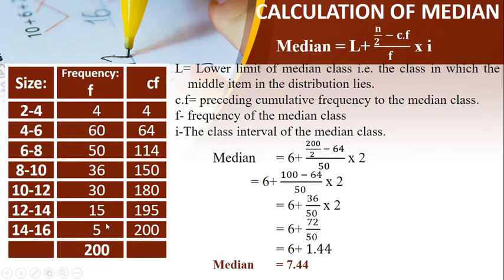Total of frequency is 200. Cumulative frequency is found out by putting the value of the first frequency, adding the next frequency and writing, adding the next frequency, adding the next and so on. So this is how the CF is found out.